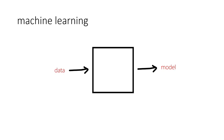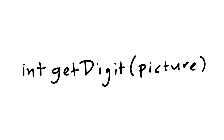In machine learning parlance, we call the thing coming in data — I think everyone calls it that. And the thing that comes out is a model, but you should think of it as a function, something that you execute and then stuff happens. I want you to see the boundaries of what comes in and what comes out, to show you how to actually use AI inside of a .NET program. We want something like int get digit — we pass it a picture, and then we want a number to come out.